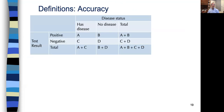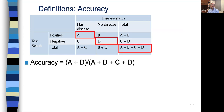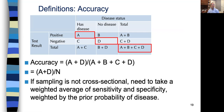More definitions. Accuracy is the percent of time the test gives the right answer in a population — going along the diagonal, that would be A plus D over A plus B plus C plus D. If the sampling is not cross-sectional, then we need to take a weighted average of sensitivity and specificity, weighted by the prior probability of disease.